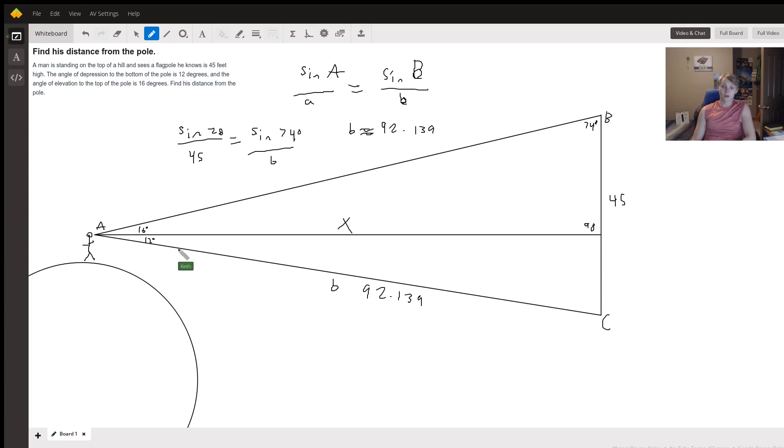And so what we can do now is take the cosine of 12. The cosine of this small angle here is equal to its adjacent leg divided by its hypotenuse, so x over 92.139.